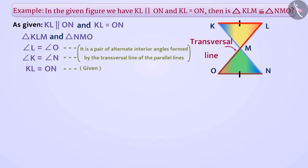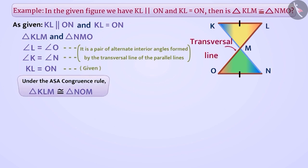Since two angles, angle K and angle L, and the included side KL of triangle KML are equal to the two corresponding angles, angle N and angle O, and the included side ON of triangle NMO, therefore, under the ASA congruence criterion, both these triangles are congruent.